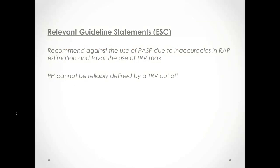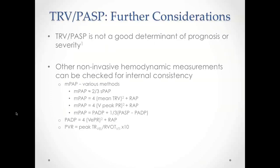The European Society of Echocardiography recommends against using PASP due to perceived inaccuracies in right atrial pressure estimation, favoring TRV max instead. Additionally, PH cannot be reliably defined by a TRV cutoff alone. It should also be noted that PASP and TRV are not good determinants of prognosis or severity, because as pulmonary hypertension progresses and RV failure develops, cardiac output falls and PASP actually peaks and then decreases. Using PASP as a surrogate for severity is therefore not reliable.